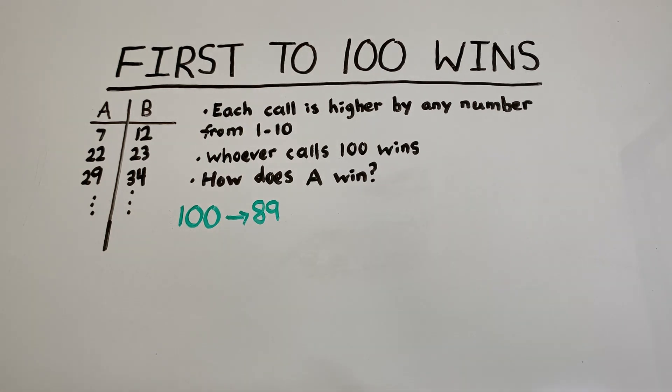So if A calls 89, then the number that B can call at most is 99, and if B does call 99, then A can just finish off the game by adding 1 and finishing with 100. So if we know A has to call 89.